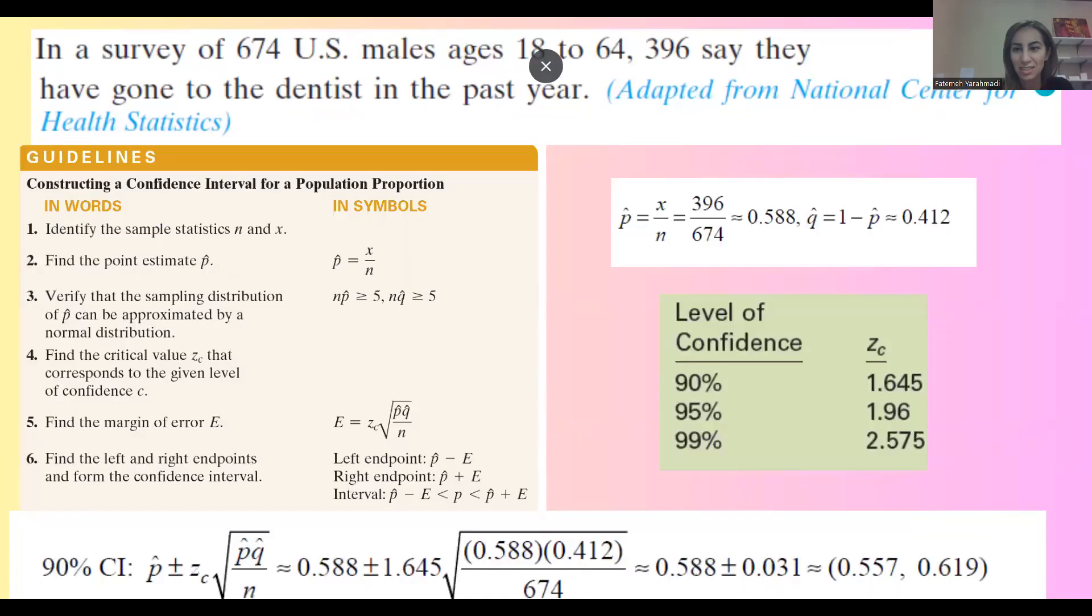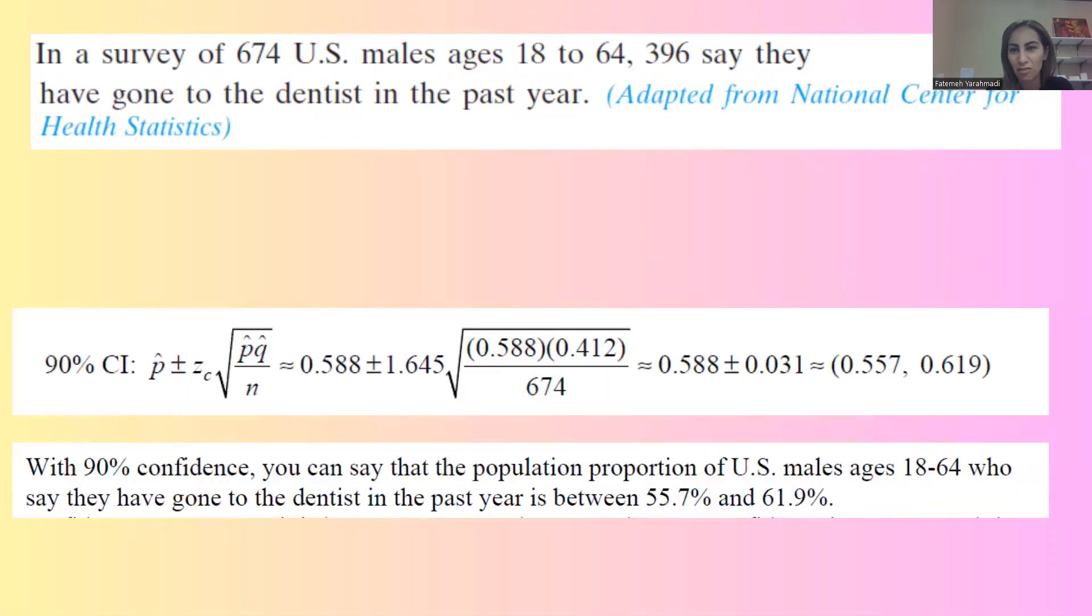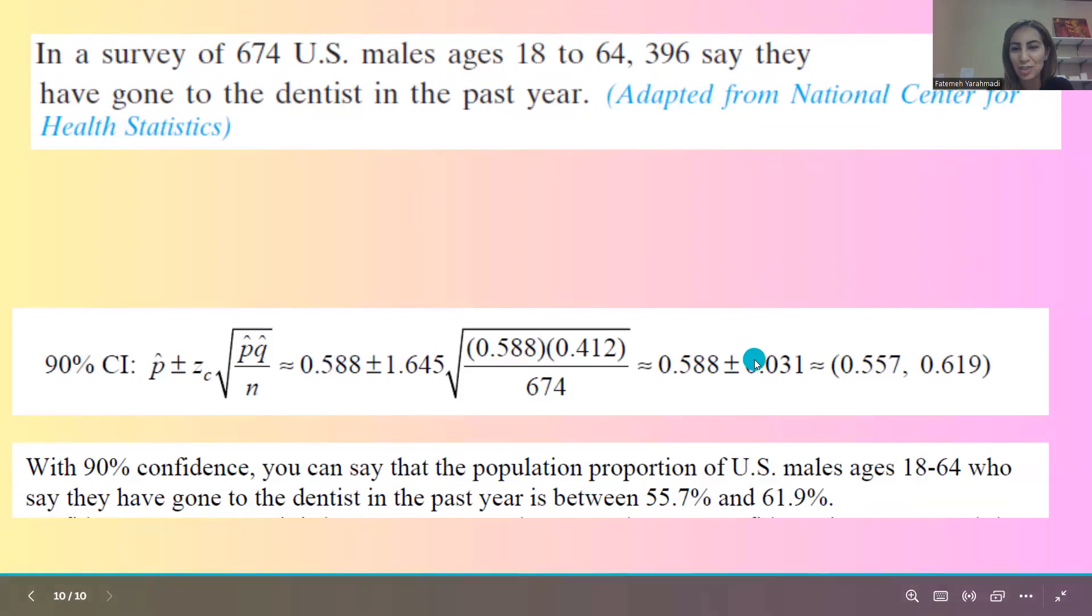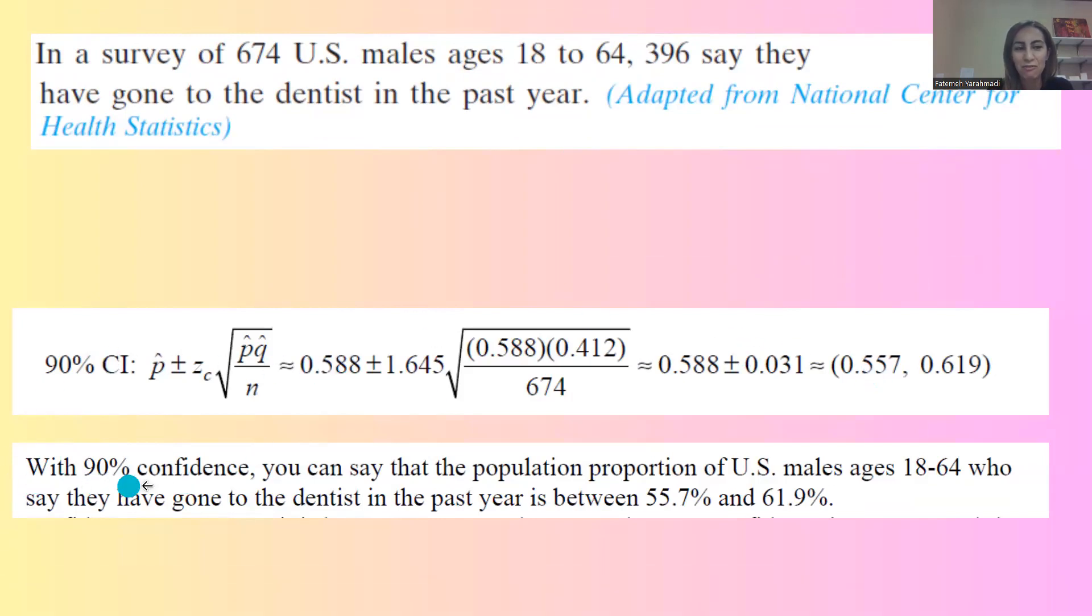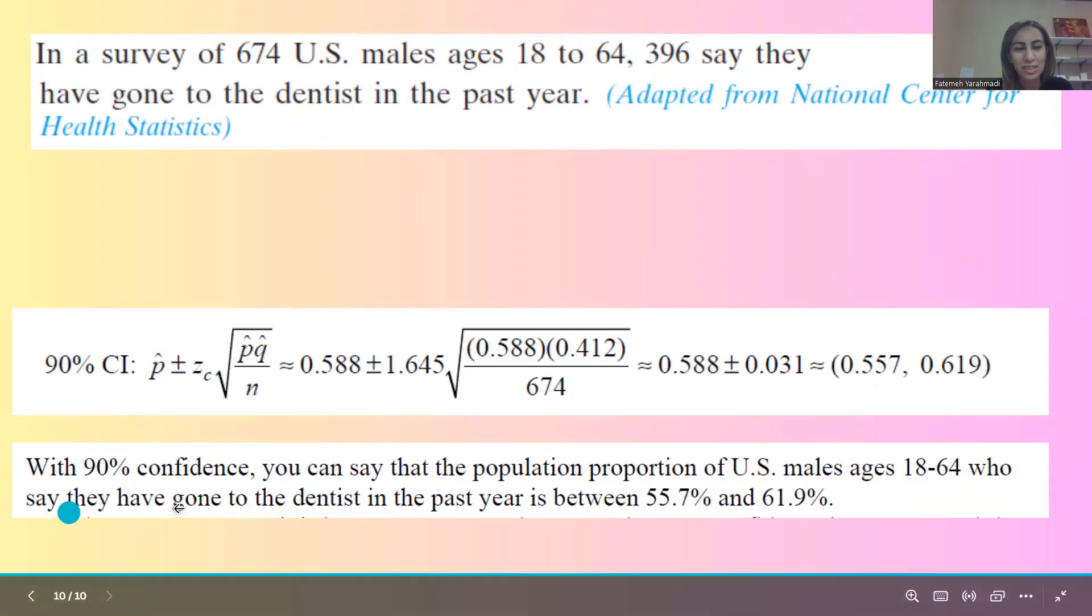So in summary, this is what we have to construct a 90% confidence interval. After doing the algebra, we are 90% confident that population proportion of U.S. males ages 18 to 64 who say that they've gone to the dentist in the past year is between 55.7% and 61.9%.